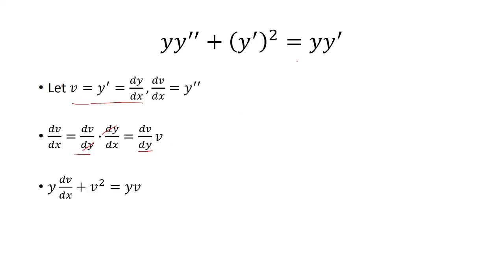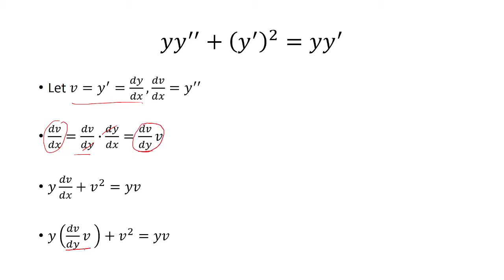Now I can go back to the original differential equation, replace y double prime with dv over dx, and y prime is just v. I have dv over dx equal to dv over dy times v, so instead of dv over dx, we replace it with dv over dy times v, and leave everything else the same.